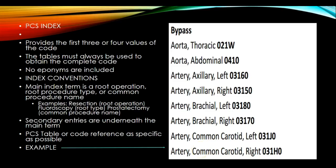The PCS index provides only the first three or four values of the code, which means you still have to turn to the appropriate table in the manual to determine the remaining three or four characters. The tables must always be used to obtain the complete code. No eponyms are included. There are index conventions in your manual that you need to read — just as with the CPT manual and the ICD-10-CM manual — because coding conventions are the groundwork and basic rules for using any of these codes.